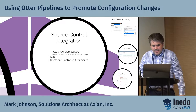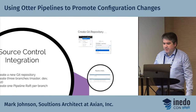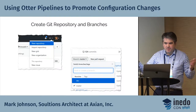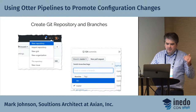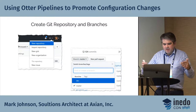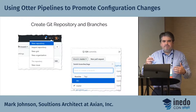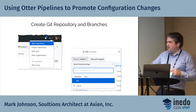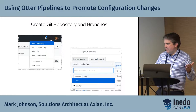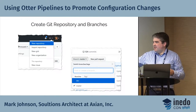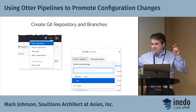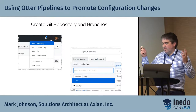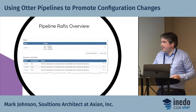For source control integration, we're going to create a new Git repository with one branch to represent each environment. So if you have four environments — development, testing, staging, and production — you just match your number of branches to the number of environments. Here I have a dev branch. I left master as production, since master is always in a Git repo, but you could call it prod if you wanted.